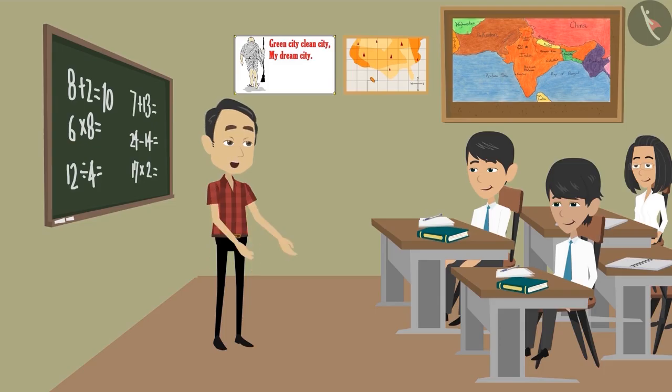No, Mohan, this may not always be true. Let me explain. Children, is 0 a rational number? Yes, sir, because we can write 0 as p by q where q is not equal to 0. Q can be any number such as 2.